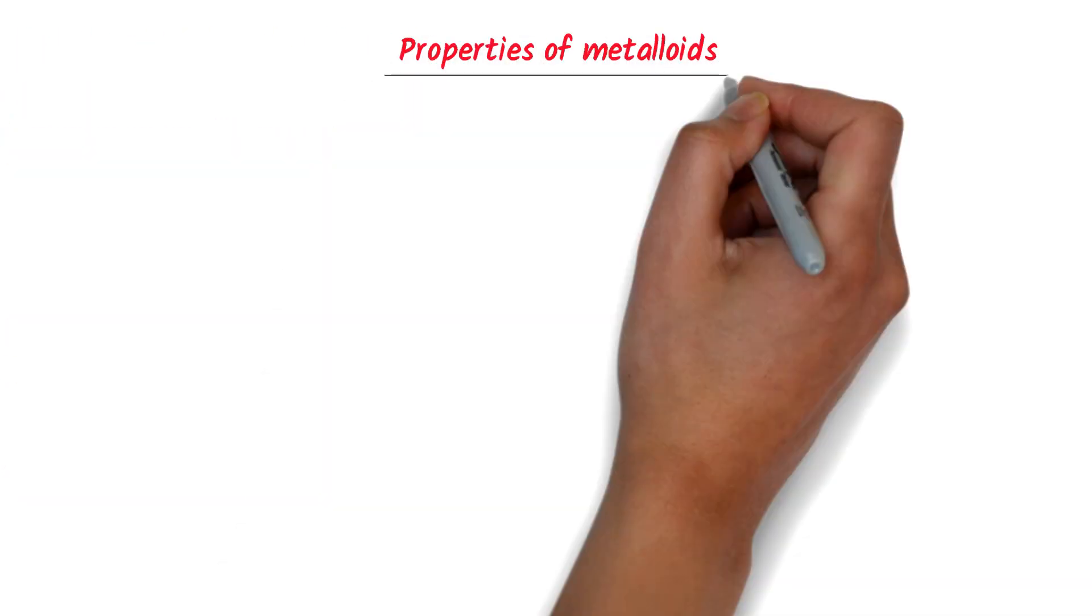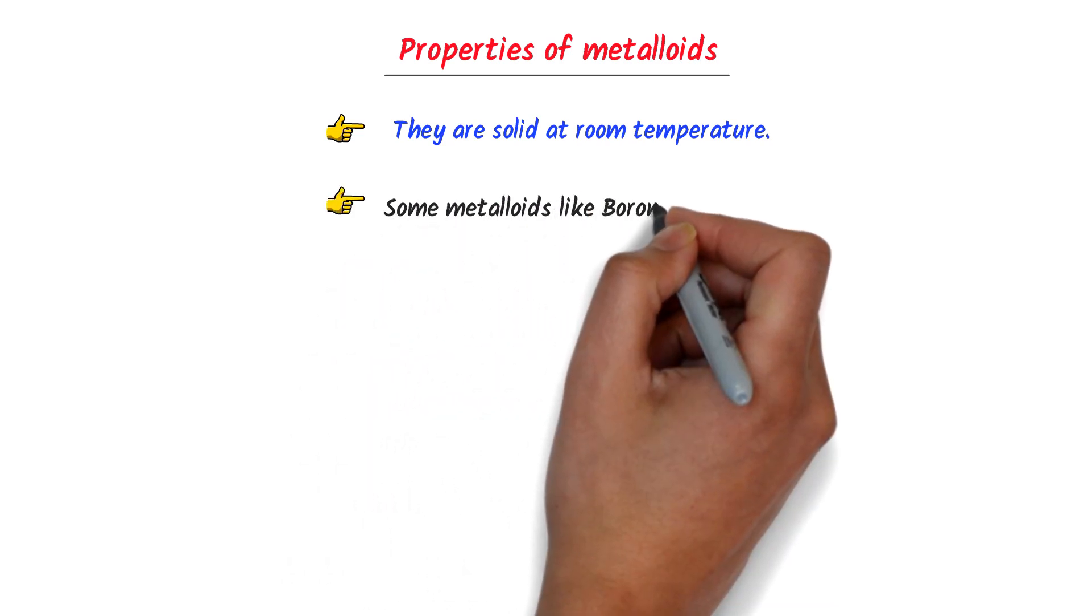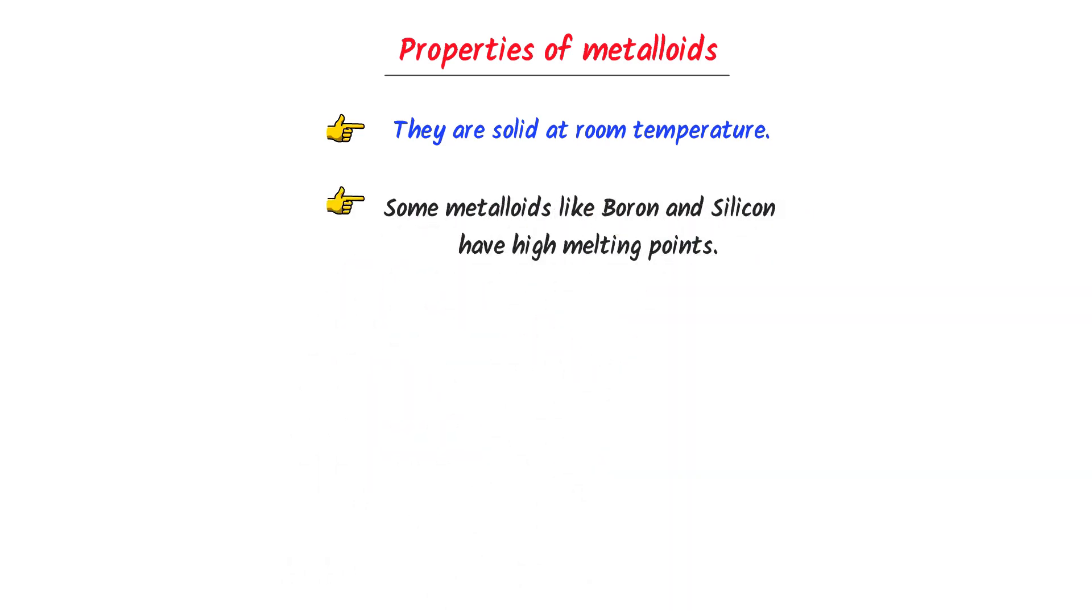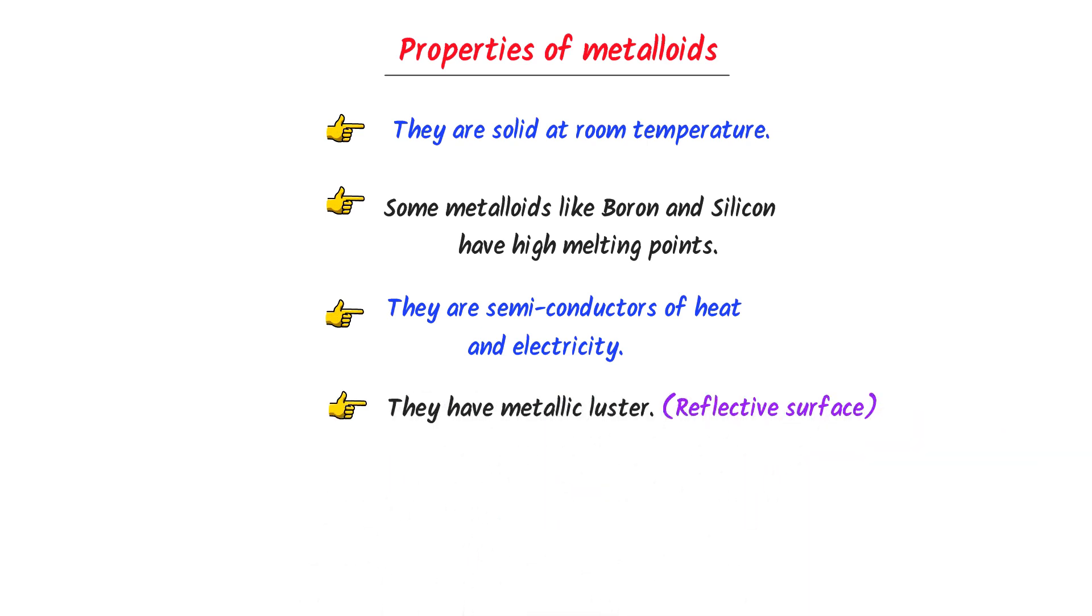Now what about the properties of metalloids? Well, metalloids are also solid at room temperature. Secondly, they have high melting points. Thirdly, metalloids are semiconductors of heat and electricity. It means that they are not that much good at conducting heat and electricity like metals. Fourthly, they have a metallic luster and generally look like metals.